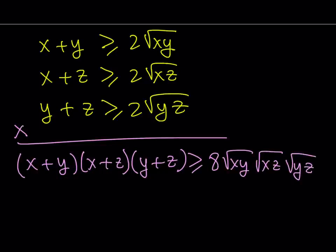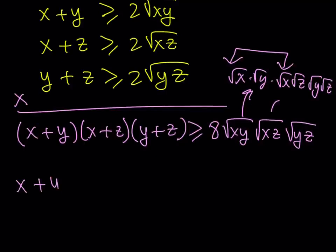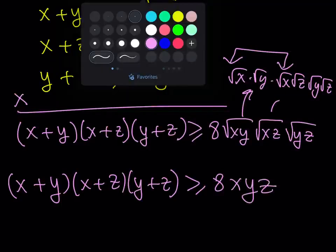Now one way to do this is consider that square root of xy can be written as square root of x times square root of y. This is the square root of x times square root of z. And then we get the square root of y times the square root of z. Notice that when you multiply square root of x by itself, you're going to be getting x from here. So x plus y times x plus z times y plus z is greater or equal to 8xyz, which is what we were trying to prove.